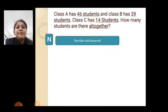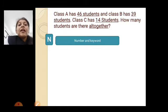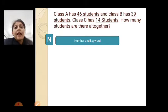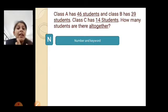Now, let's see. Class A has 46 students, Class B has 39 students, and Class C has 14 students. Then, how many students are there all together? Here we have three classes given. So first, the numbers are three: 46, 39 and 14. And the keyword is all together, right.